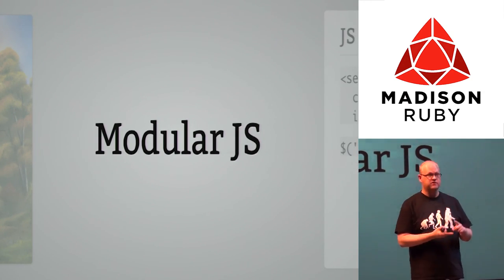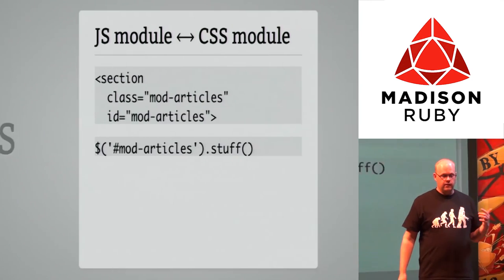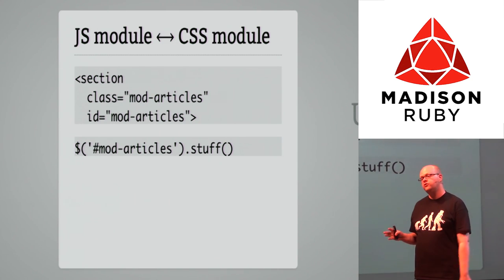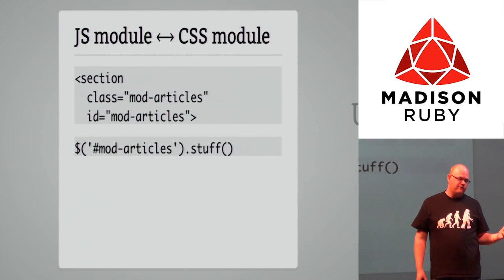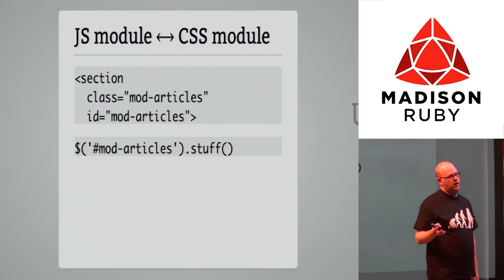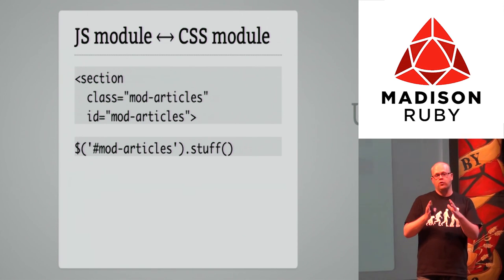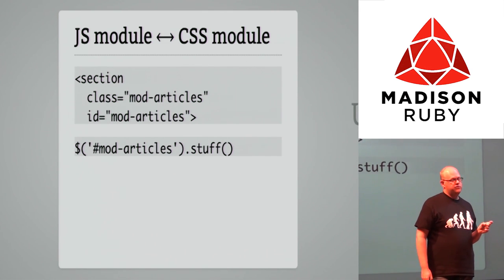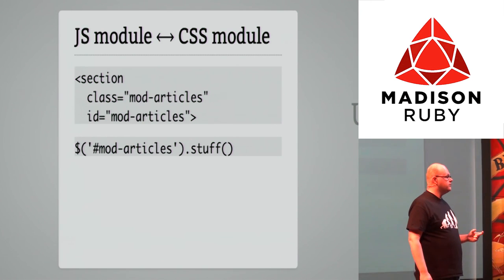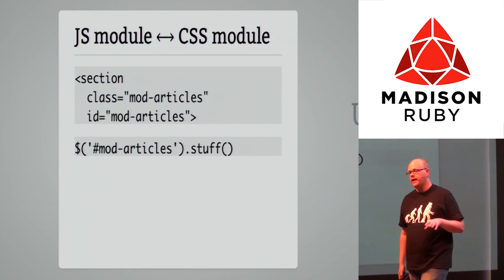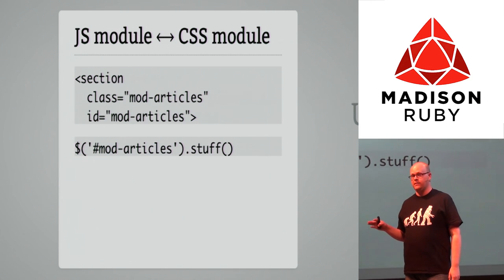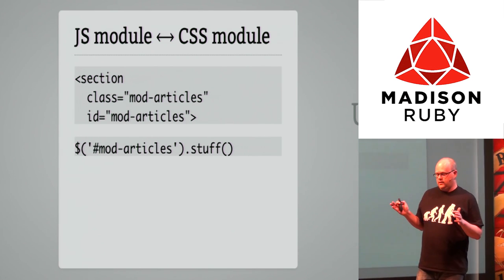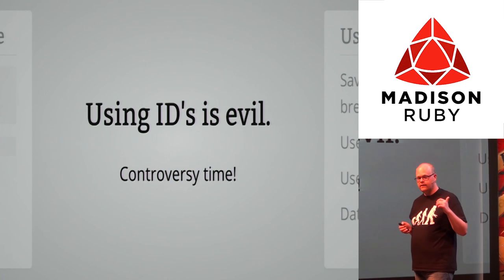Now JavaScript. We've had structure and styling, so it's time for behavior. Modular JS — a JavaScript module is tied closely to your CSS module. If I have an articles CSS module, I also have an articles JavaScript module, both about the same piece of code. I use class names for styling and IDs for JavaScript and testing, exclusively. I never use IDs in my CSS and I never use classes in my JavaScript. I reference elements using jQuery.